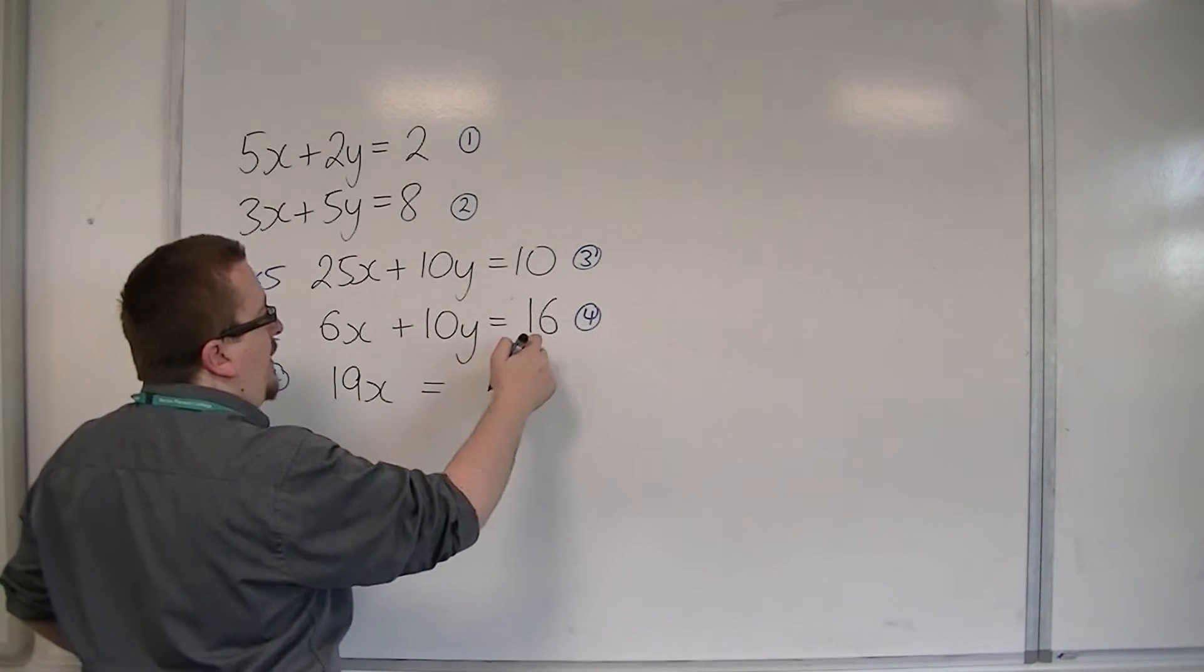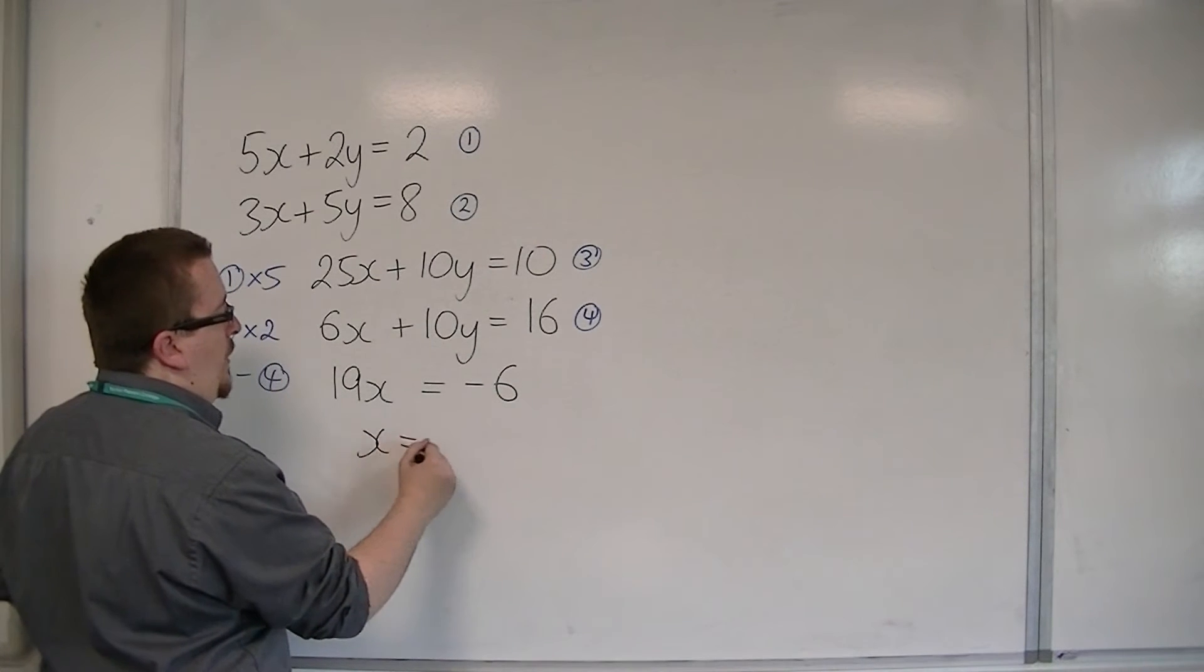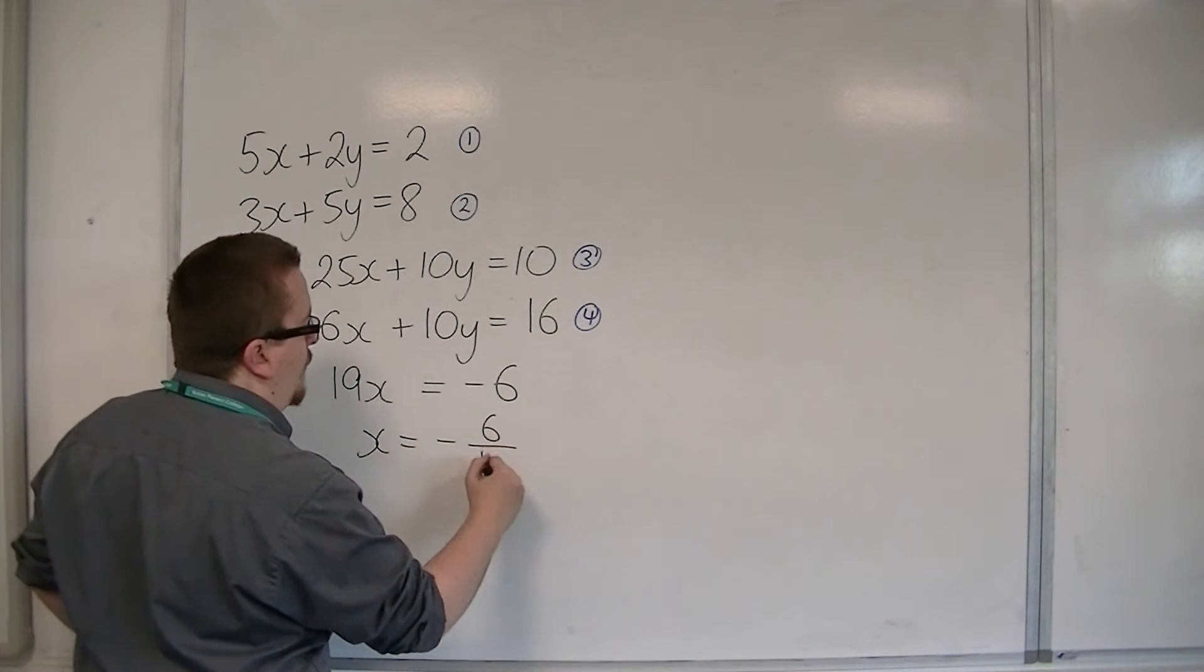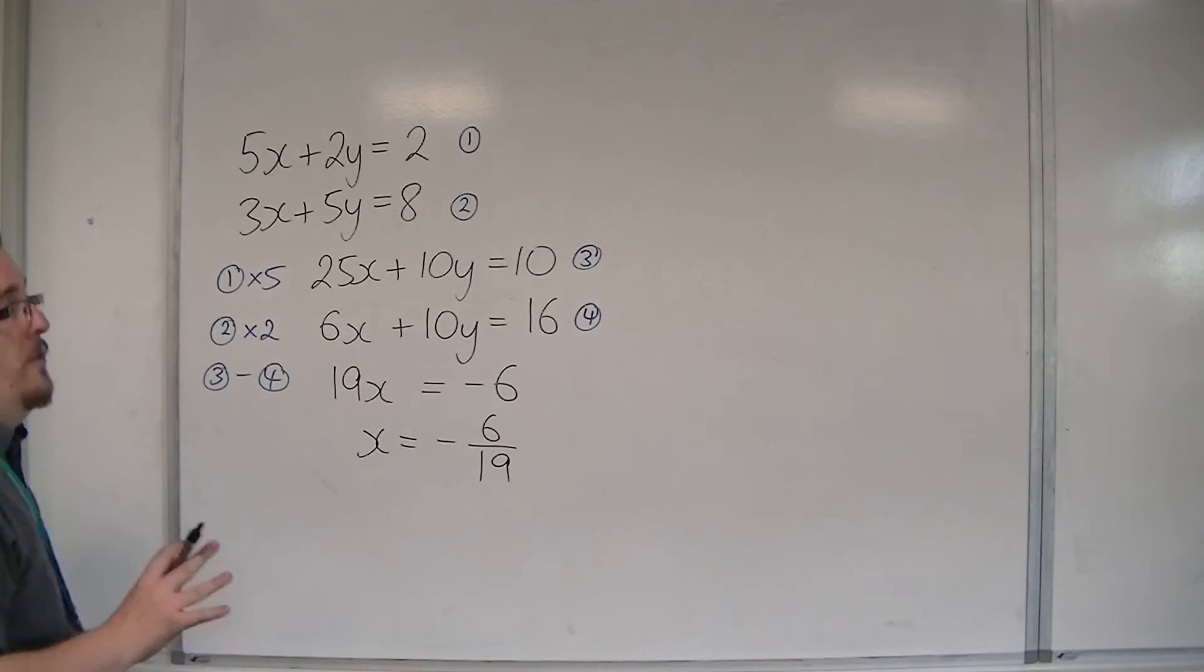10 take away 16 is minus 6. So, x is equal to minus 6 over 19. Not a very nice number at all.